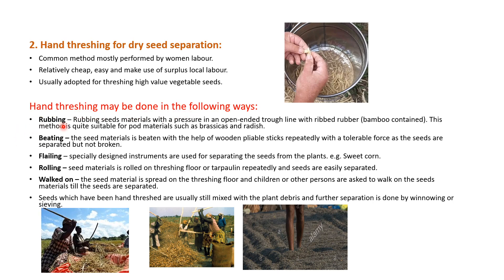The different types of hand threshing methods include: rubbing, which involves application of pressure in an open trough lined with ribbed rubber; beating, which involves hitting a pile of seed materials with a stick; flailing, where a pliable wooden stick is used to beat the harvested plant material to separate seed from it; and treading, a method which allows workers to tread on seeds piled up on a tarpaulin or on the ground.